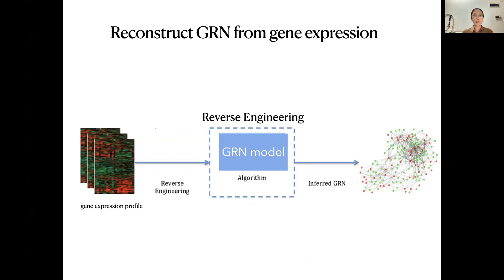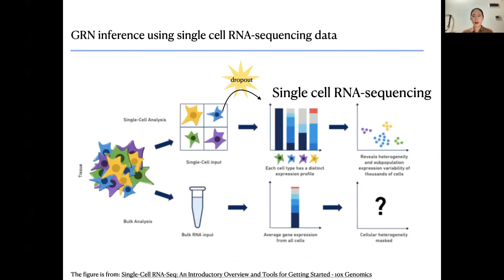We need algorithms to reconstruct the GRN from gene expression profiles by reverse engineering. People have developed algorithms for bulk data; however, bulk data and single-cell sequencing data are quite different. Bulk data can only get the average gene expression from all cells, while single-cell RNA sequencing can get expression levels at cell resolution, so each cell type will have a distinct expression profile.